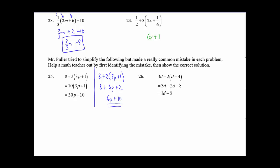Where's the mistake over here? Well, notice in this second one right here, there is no 8 plus 6p plus 2. There's a 10. So what did Mr. Fuller do? He added the 8 and the 2 first. So Mr. Fuller added 8 plus 2 before distributing the 2.